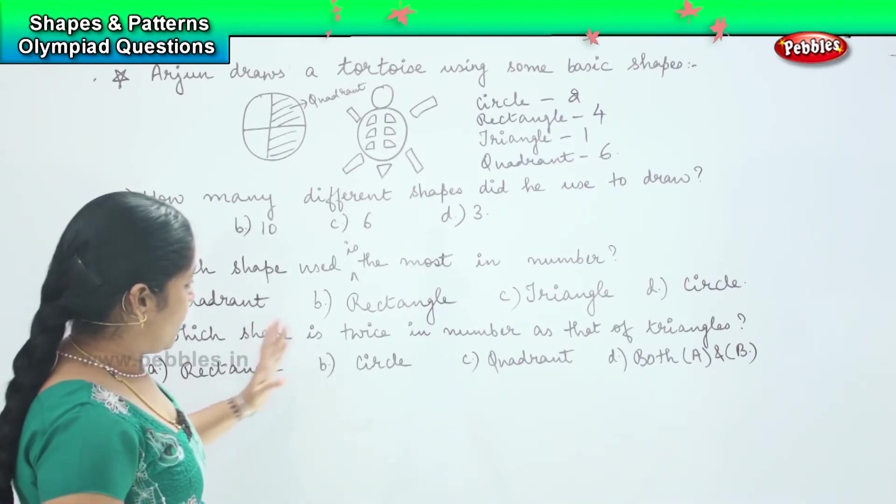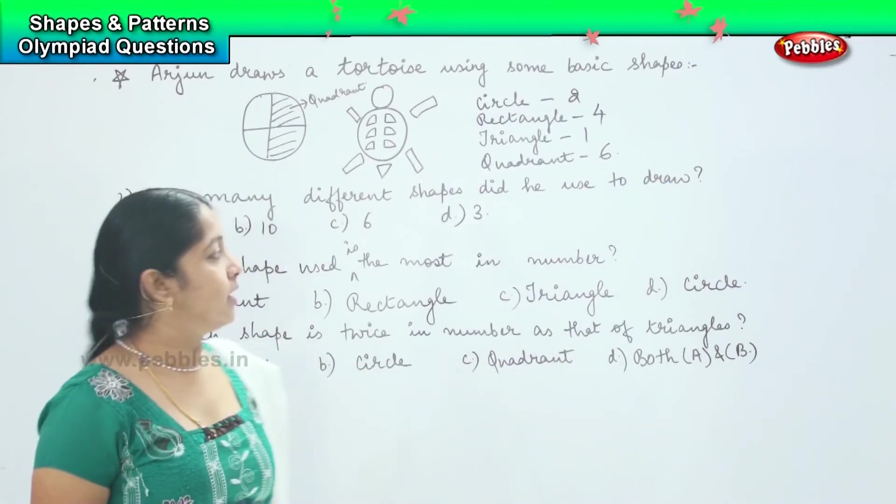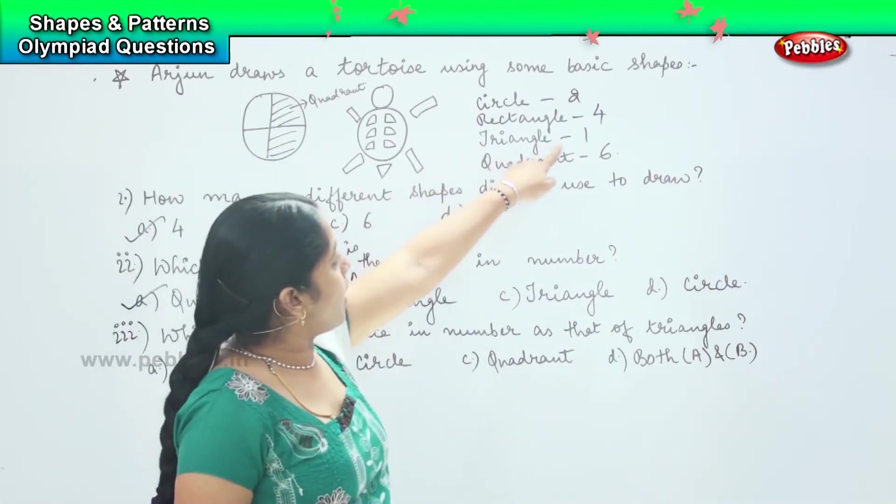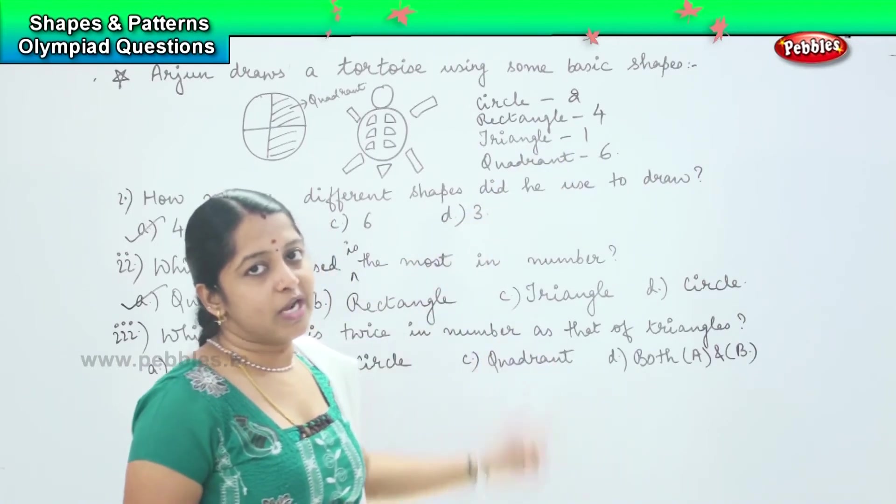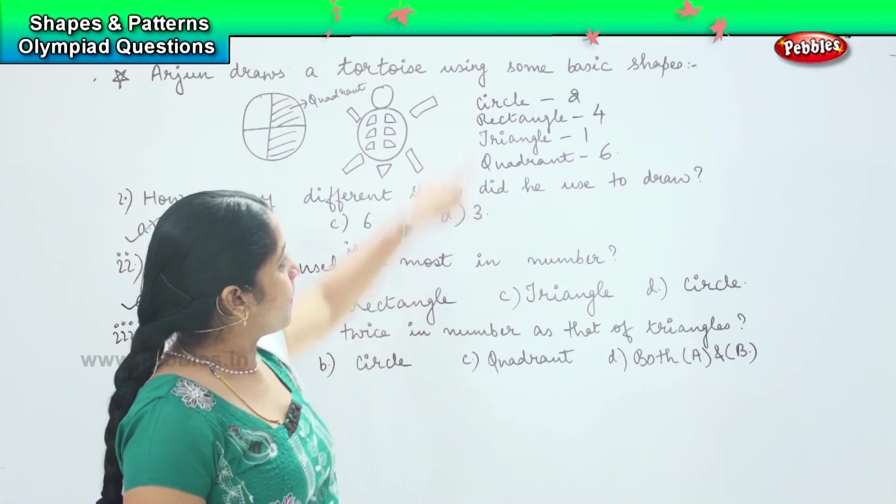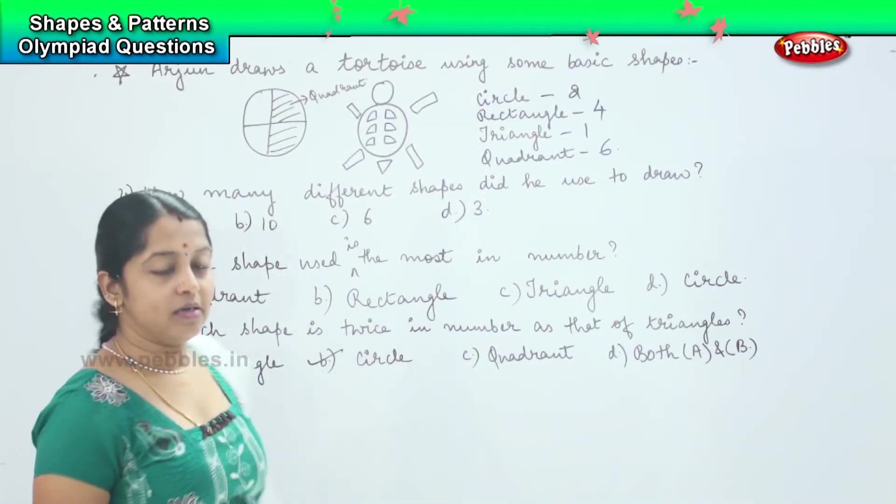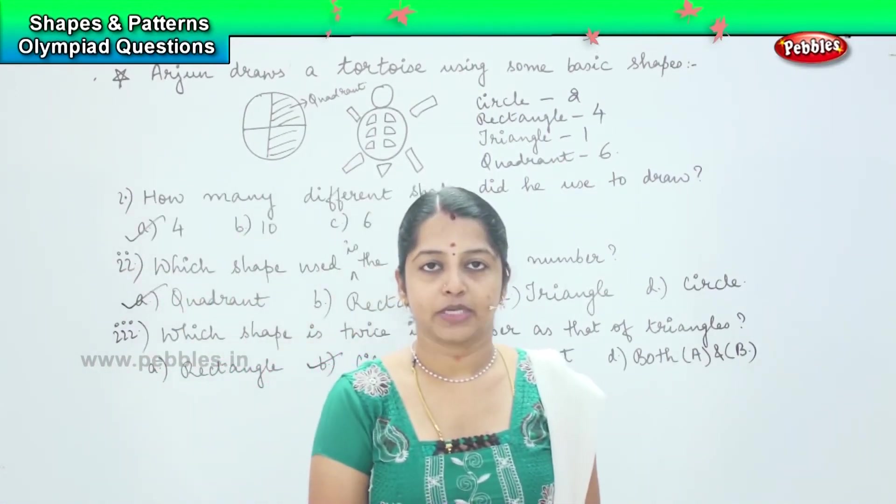Clear? Which shape is twice in number as that of triangle? So how many triangles are there? It is only 1. And then which is 2 times of 1? 2. So which is 2 in number? Very good, it is the circle. So option B, circle, is the right answer.